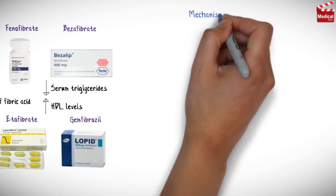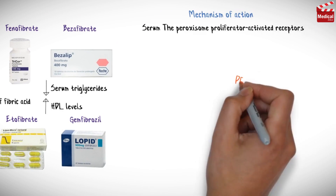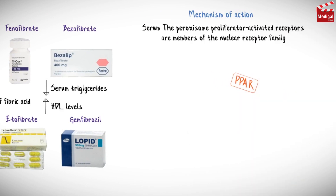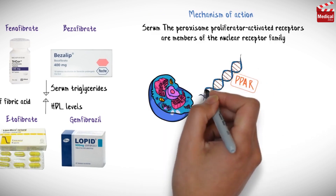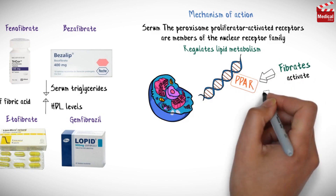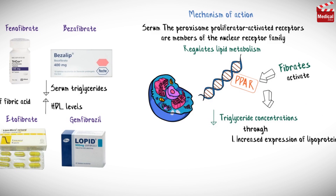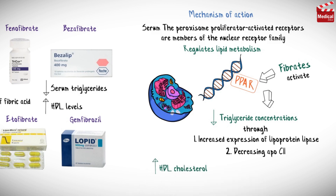The peroxisome proliferator-activated receptors are members of the nuclear receptor family that regulate lipid metabolism. Fibrates activate these receptors, leading to decreased triglyceride concentrations through increased expression of lipoprotein lipase and decreasing apolipoprotein C2 concentration. Fibrates also increase the level of HDL cholesterol by increasing the expression of APOA1 and APOA2.